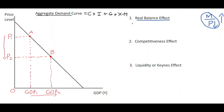In real terms: the price level in our graph has dropped. What this means is that the purchasing power of your money — your wealth — goes up. With more purchasing power and wealth you can consume more goods and services, and if you consume more goods and services, the output level and expenditure related to that will go up as well. This is the real balance effect: when prices go down, expenditure on output increases.